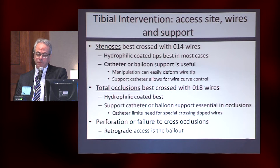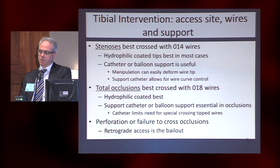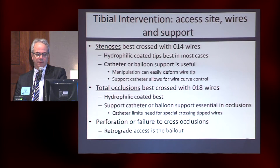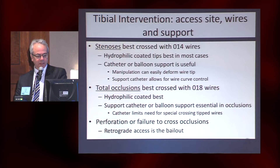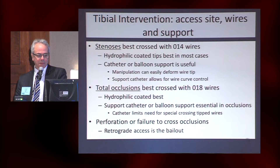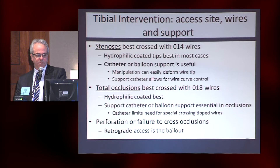You can use a balloon if you want, although I prefer to use a support catheter. Total occlusions in the tibials in my hands are best crossed with an 018 wire — the support and the hydrophilic tip you get are much more effective. There is some aggressive aspect to this, but if you know what your backups are, you shouldn't be worried about pushing a wire out the side of a tibial. A support catheter or balloon is essential to cross these occlusions.